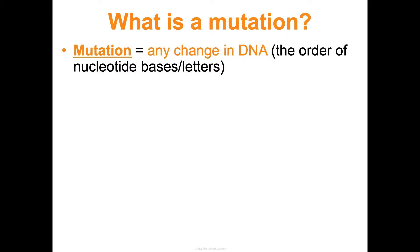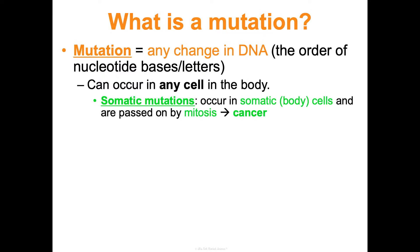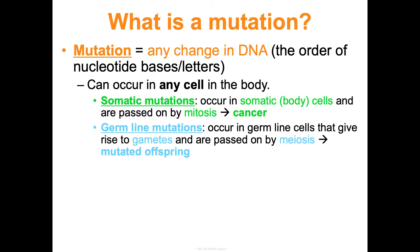A mutation can occur in the DNA that's in any cell in your body. Somatic mutations occur in somatic cells — your body cells — and they're passed on by mitosis. They can result in cancer if the cell ends up with uncontrolled growth and division.